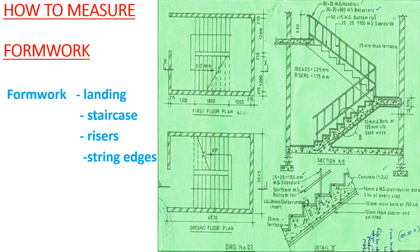When doing formwork for our staircase, we need formwork on four particular aspects: we need formwork on the landing, formwork on the staircase soffit, formwork on the risers, and formwork on the string edges. Those four elements are the ones we are going to look at.